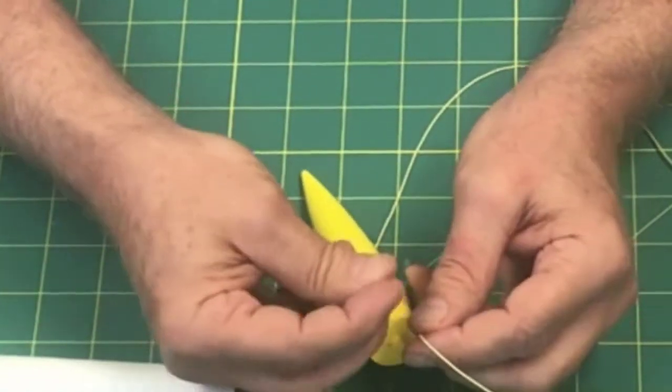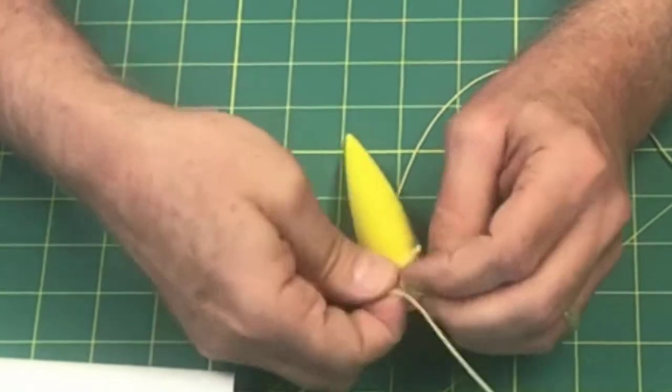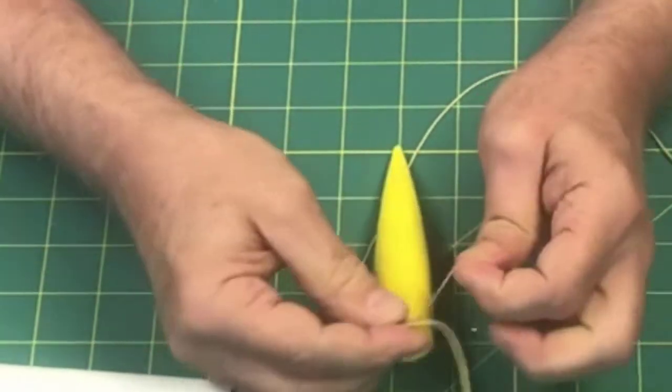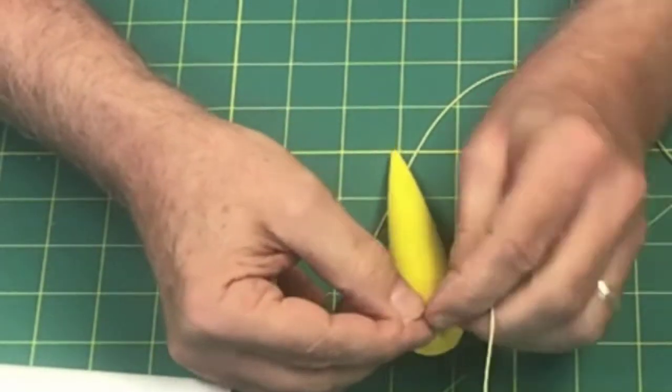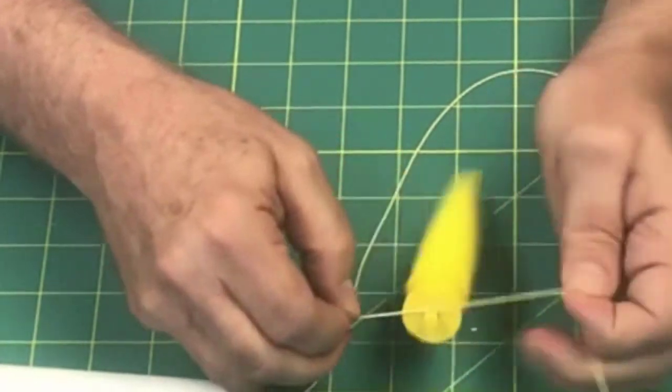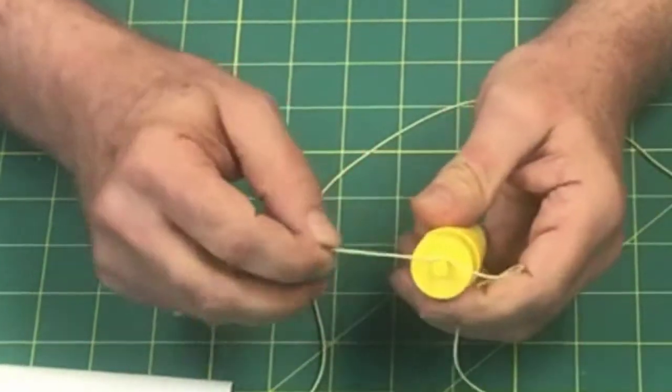So you're going to take the right hand side, go over the left, pull it really tight, and take the left hand side, go over the right, and pull it good and tight. Now this Kevlar always likes to come loose - the knots tend to come out of it.